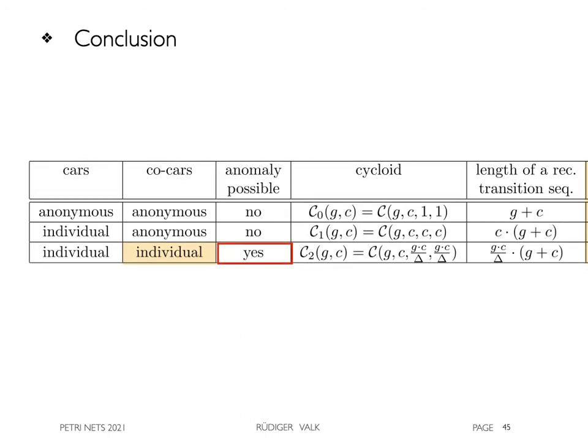Then, follow the related cycloids with their length of recurrent transition sequence containing delta in the last case. Finally, we have the corresponding iterations.